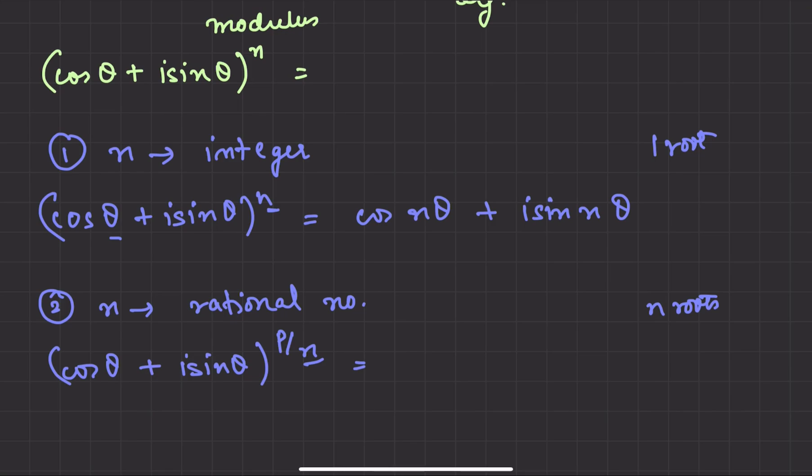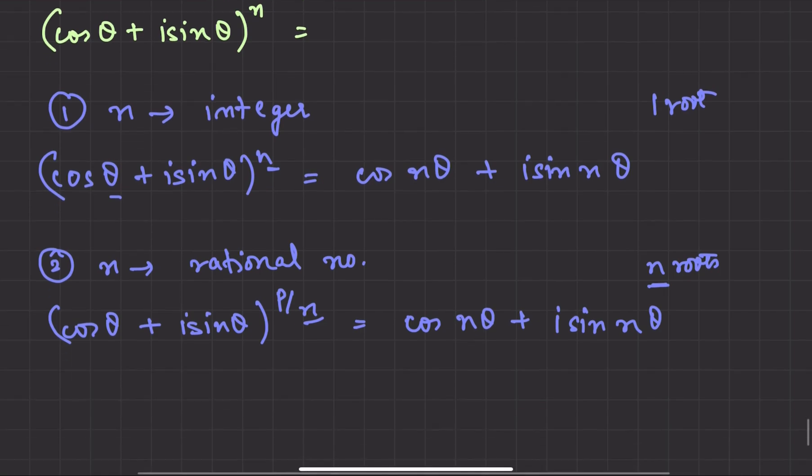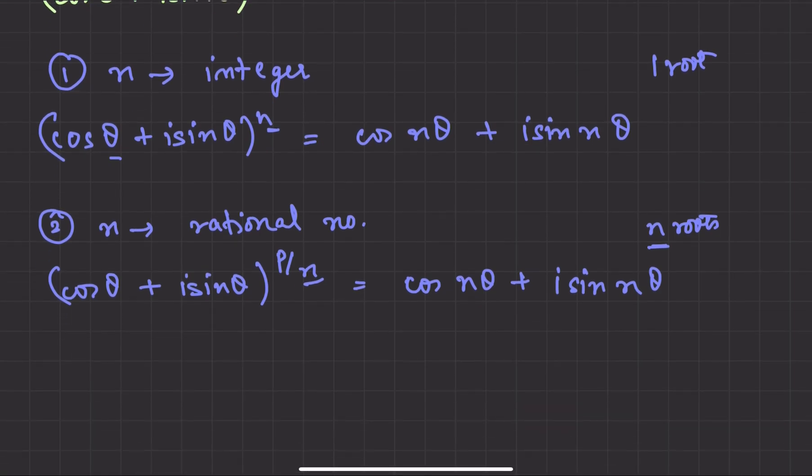So we will have n roots here, and one root here is also going to be cos n theta plus iota sin n theta. But there will be other roots that exist. You will have to find those out. Now the second case, the rational number, there is something else you have to see.